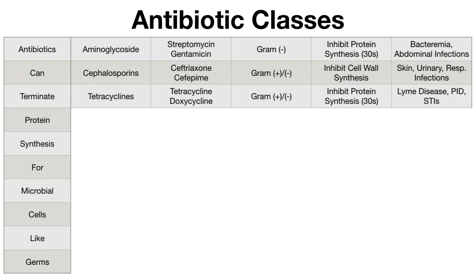Next in the mnemonic we have tetracyclines. Some examples include tetracycline and doxycycline. These drug names typically end in 'cyclin.' Tetracyclines cover both gram-positive and gram-negative bacteria. Their mechanism of action is very similar to aminoglycosides in that they inhibit protein synthesis, specifically targeting the 30S subunit of the ribosome. Some example uses include Lyme disease, pelvic inflammatory disease, and some sexually transmitted infections.